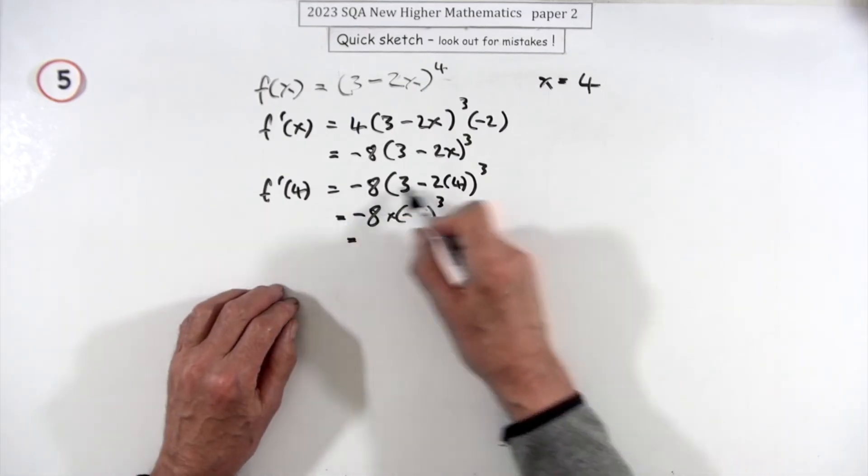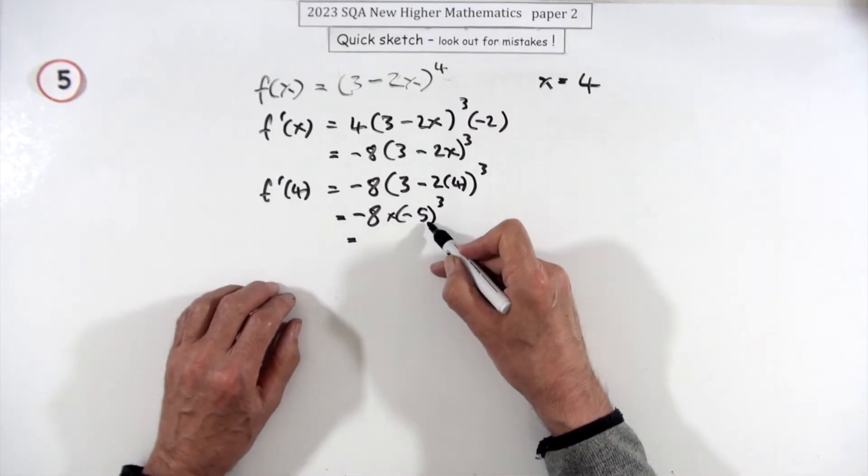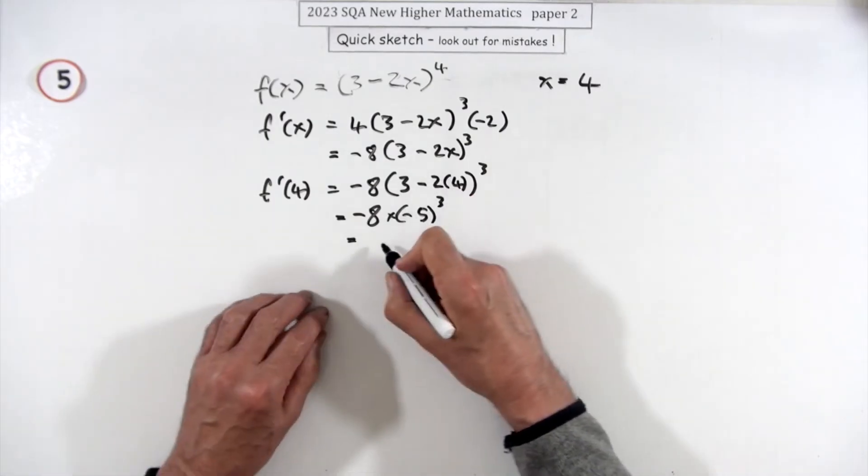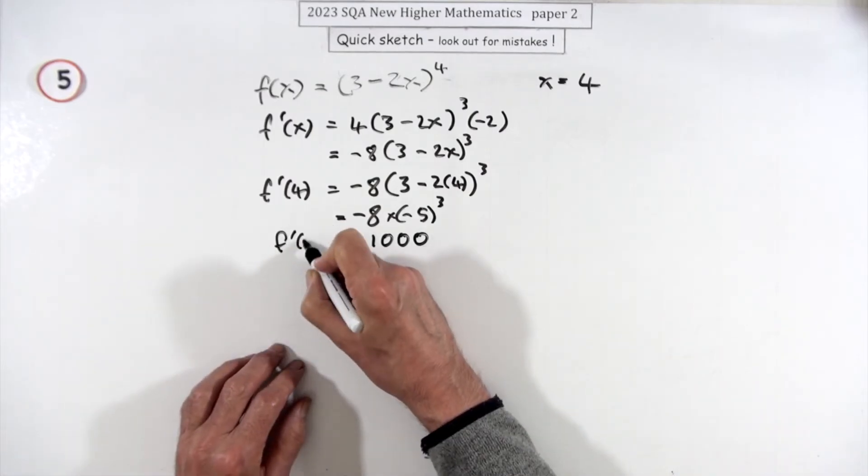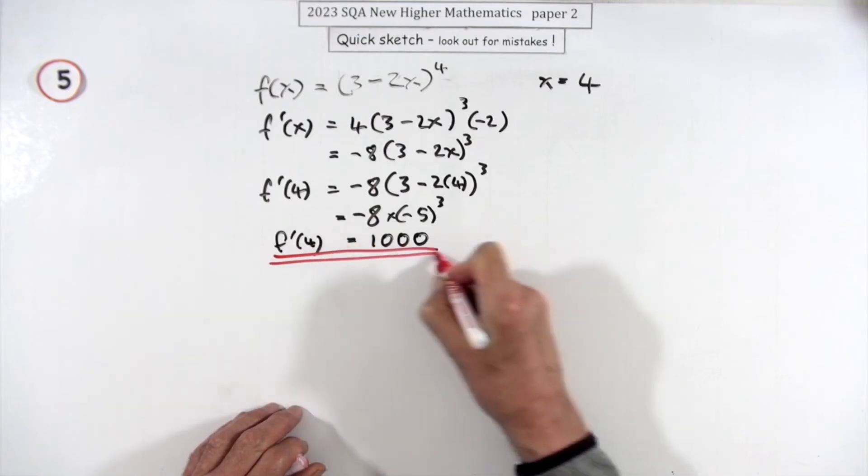Now negative times negative is positive. It's paper two so I suppose at that point you could just type it all in. Here I'll just say you've got 5 cubed is 125, 8 times 125 goes in nicely - that's a thousand. So the rate of change at four is a thousand. There's another three marks.